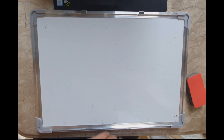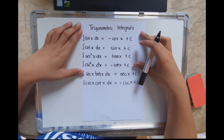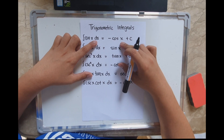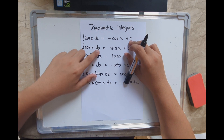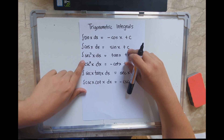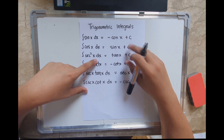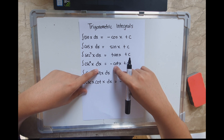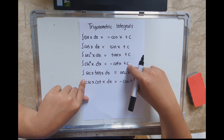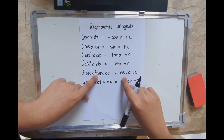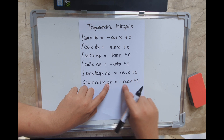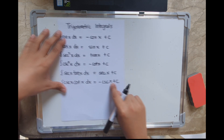Let's proceed to the trigonometric integrals. We have: the integral of sin(x) dx equals negative cos(x) plus C; the integral of cos(x) dx equals sin(x) plus C; the integral of sec²(x) dx equals tan(x) plus C; the integral of csc²(x) dx equals negative cot(x) plus C; the integral of sec(x)tan(x) dx equals sec(x) plus C; and the integral of csc(x)cot(x) dx equals negative csc(x) plus C.